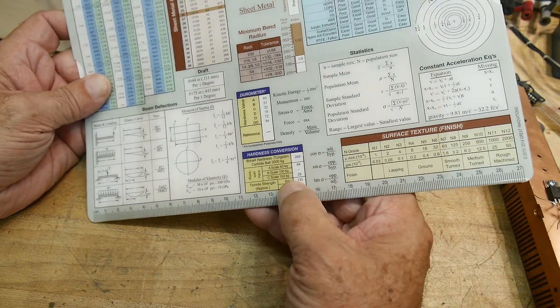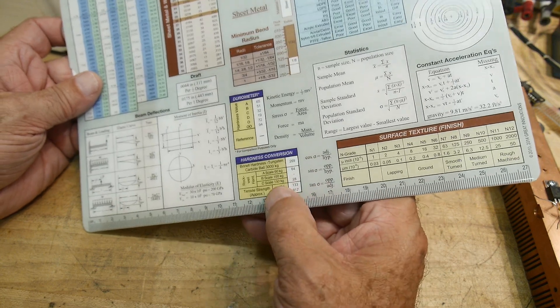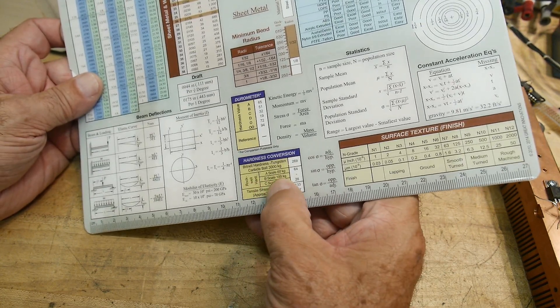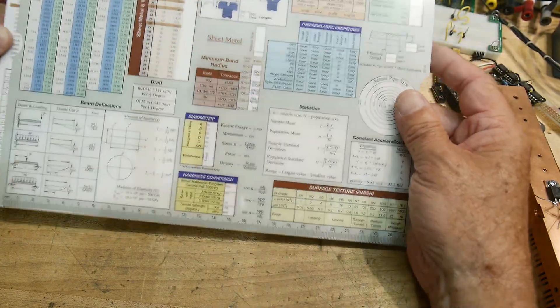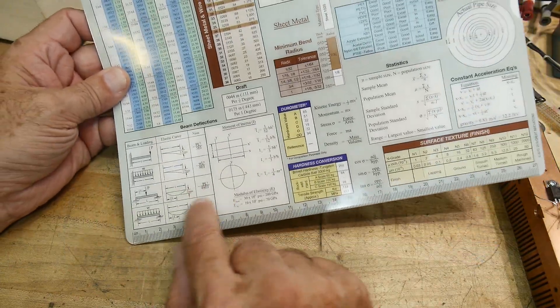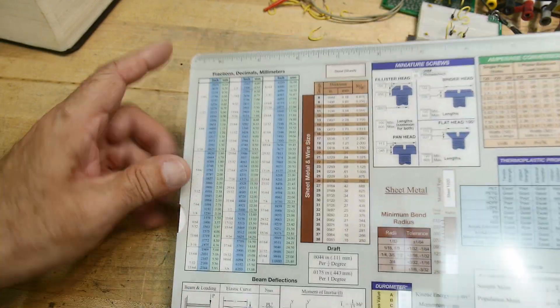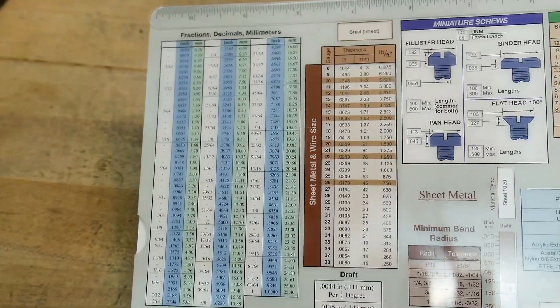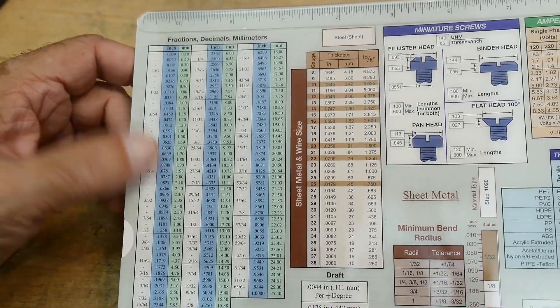These are just kind of hardness scale corrections. I mean, translations, right? So if you have a Rockwell number and you want a Brinell number, how to translate the two, you can slide the thing back and forth. Here's some formulas for beam deflection and things. And here's the standard chart for fractions and for tap fractions, decimals, millimeters, things like that. That's always handy.